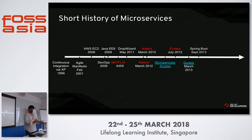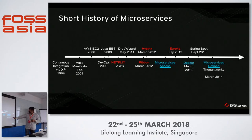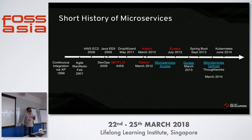Spring Boot took all those Netflix OSS components and bundled them together to help you develop cloud-native Java apps — also called microservice applications. ThoughtWorks defined exactly what microservices is. The definition you saw on the first slide was very close to this. And the revolution we are now in is Kubernetes, which started in June 2014 — now everywhere you see Kubernetes deployments instead of raw Docker deployments.